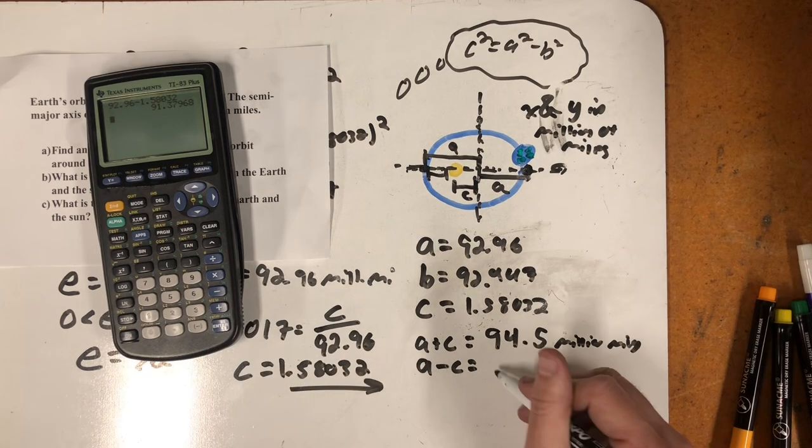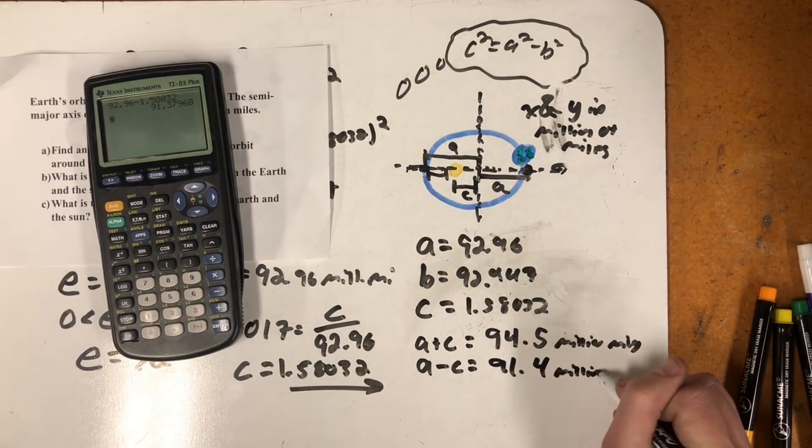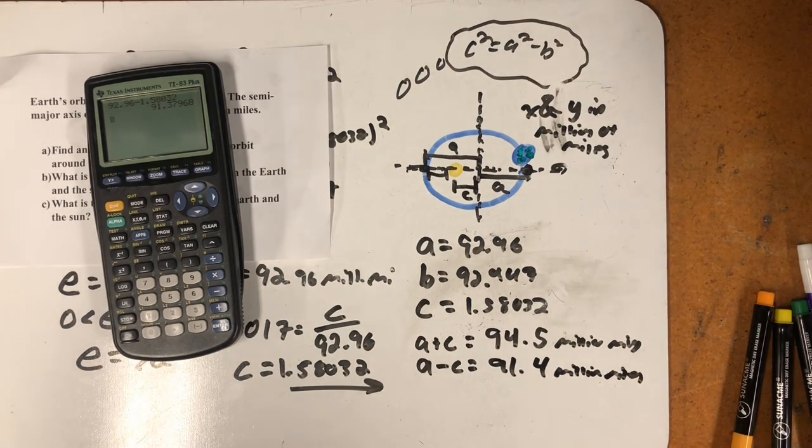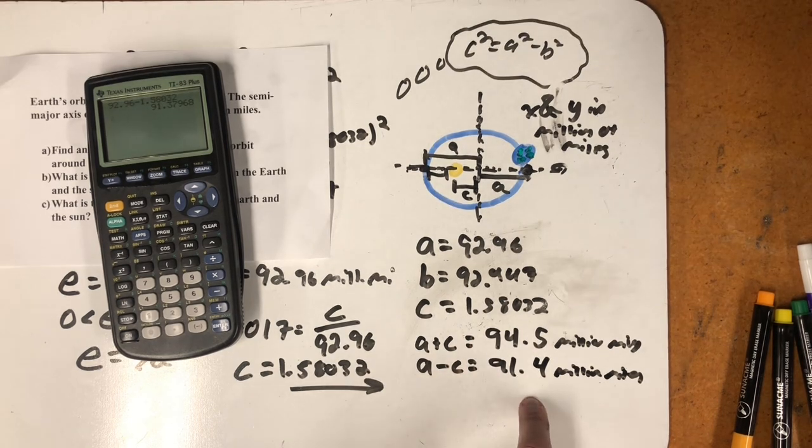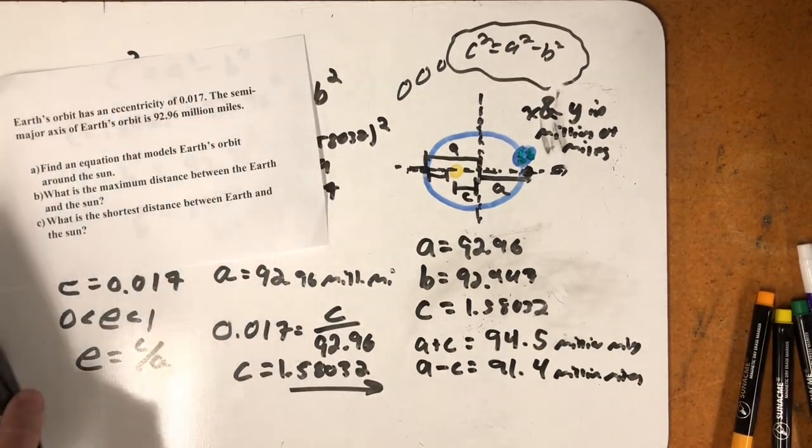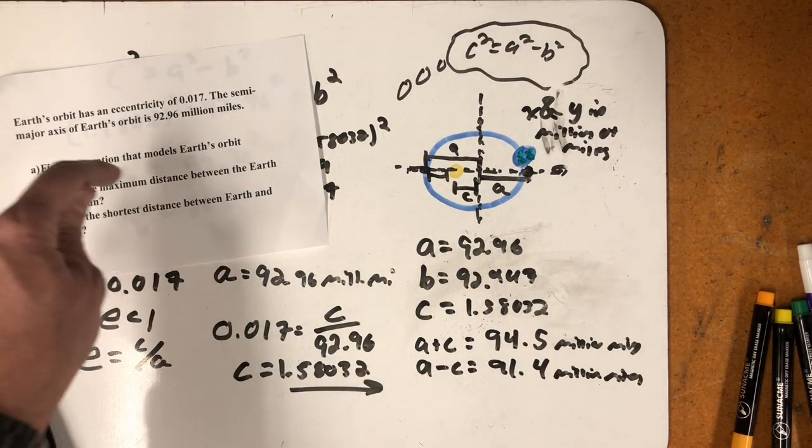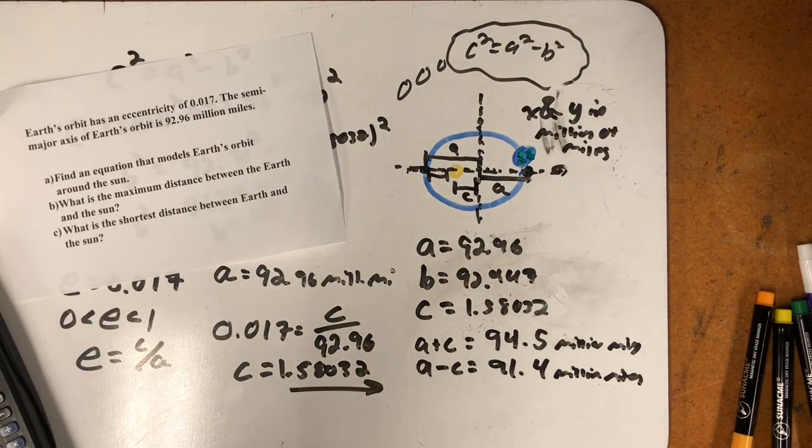91.4 million miles. The furthest Earth ever is away from the sun is 94.5 million miles, and the closest is 91.4 million miles. And there we have it. We've modeled Earth's orbit with an ellipse, and we've been able to find the largest distance between the Earth and the sun and the shortest distance between the Earth and the sun.